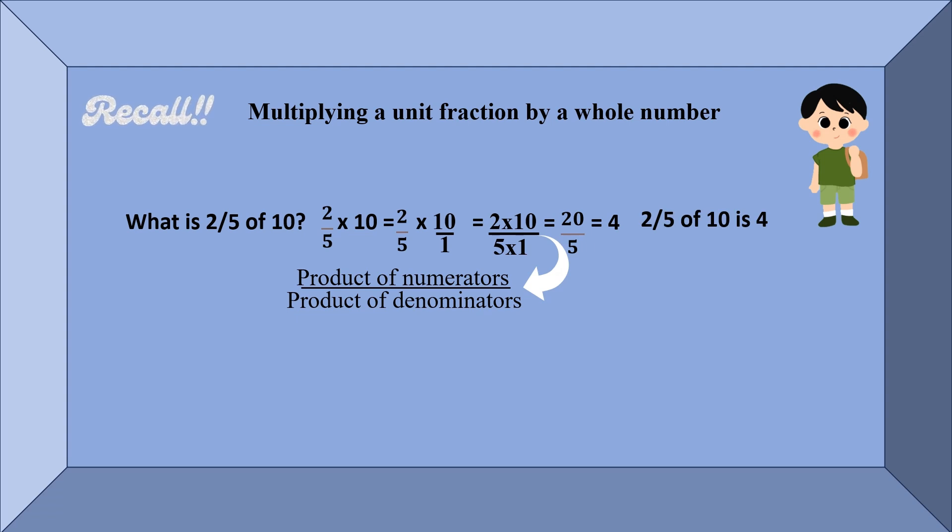So we conclude 2/5 of 10 is 4. Now here is an interesting fact about multiplication of whole numbers: when you multiply two whole numbers, the answer becomes bigger than both the numbers.